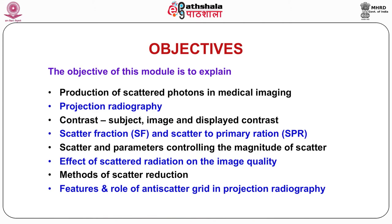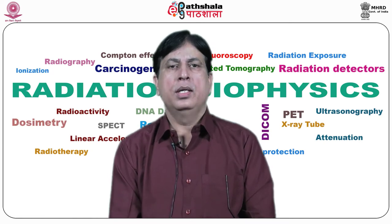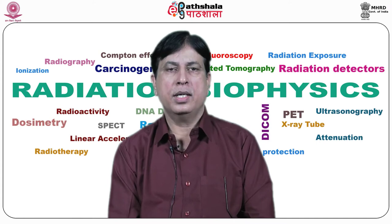Number 1: the production of scattered photons in projection radiography — specifically in context of general radiography. What is projection radiography, contrast that is subject image and displayed contrast, scatter fraction SF and scatter-to-primary ratio SPR, magnitude of scatter and its dependence on imaging variables such as X-ray energy, field size, patient thickness and angle of incidence, effect of scattered radiation on image quality, methods of minimizing scattered radiation, and features and roles of anti-scatter grids. We will also briefly cover other methods of minimizing scatter, because scattered radiation is unwanted in medical imaging.